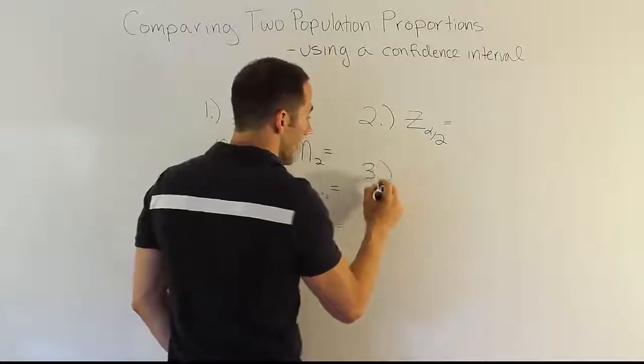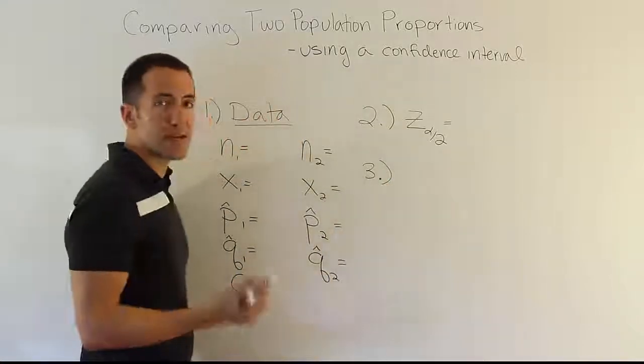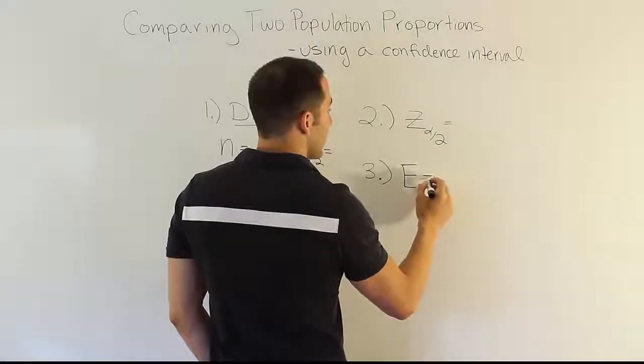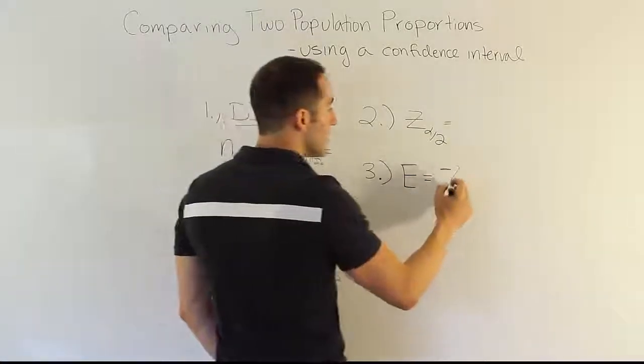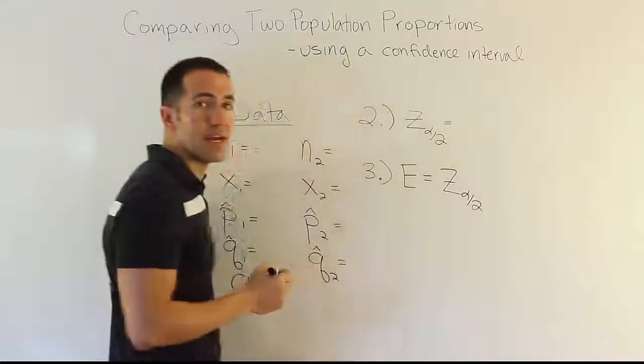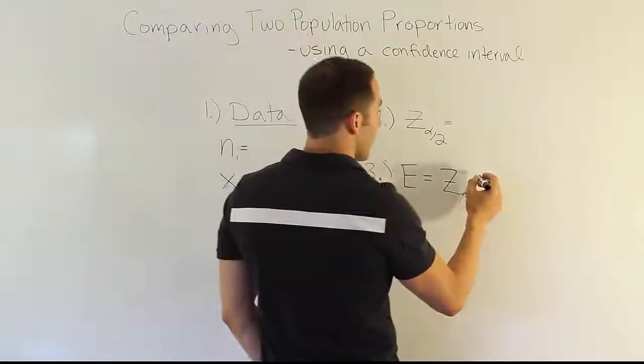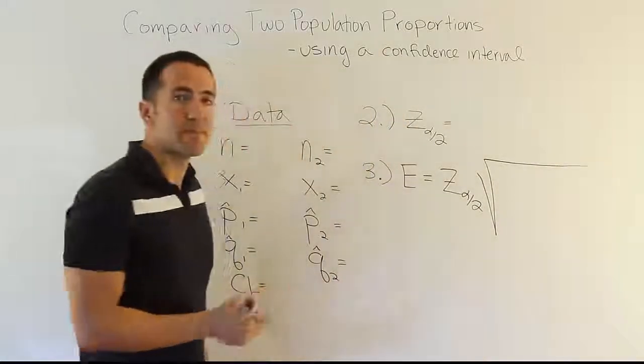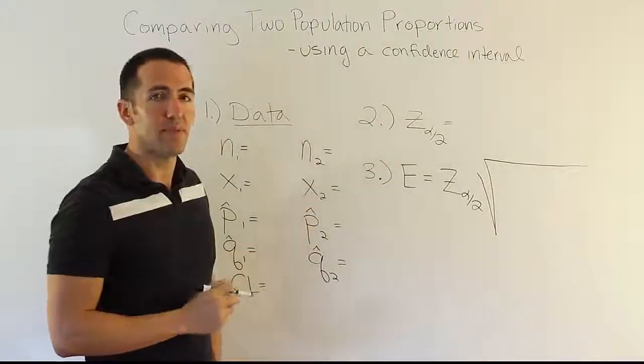Okay, then, for number three, the third step in the process, we always use that step to calculate the margin of error. Now, the margin of error requires, remember, the table value, z alpha divided by 2, in this case, times a standard error.